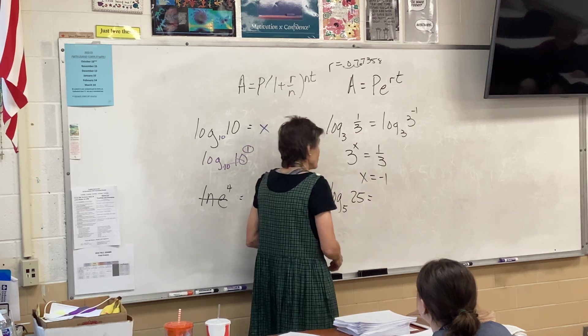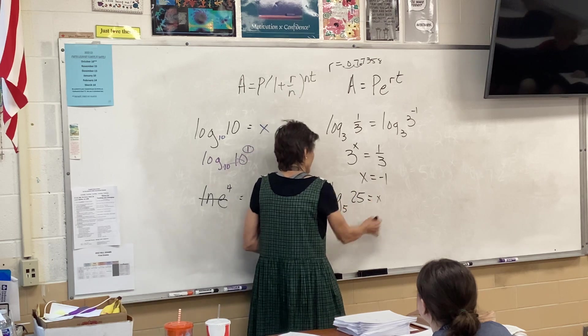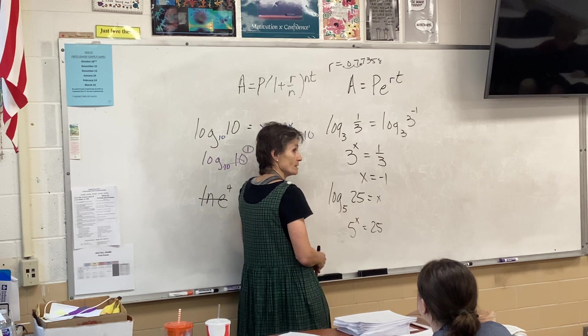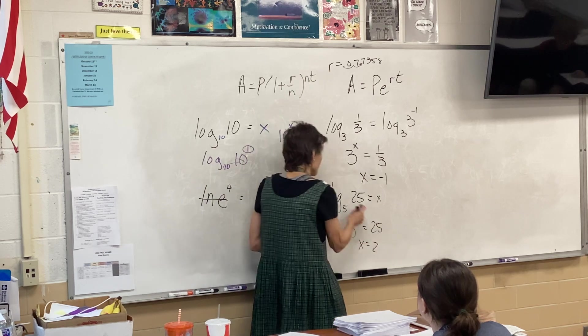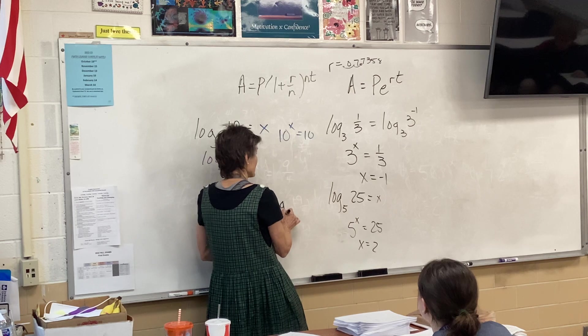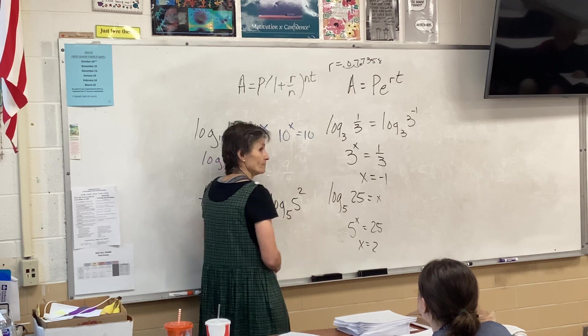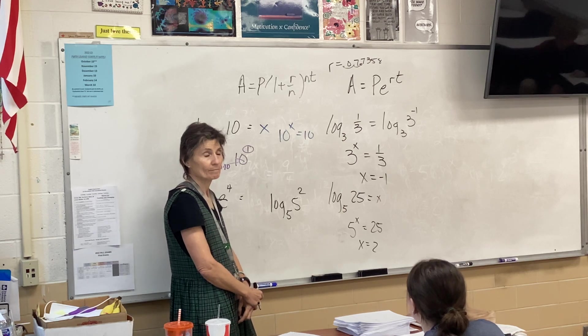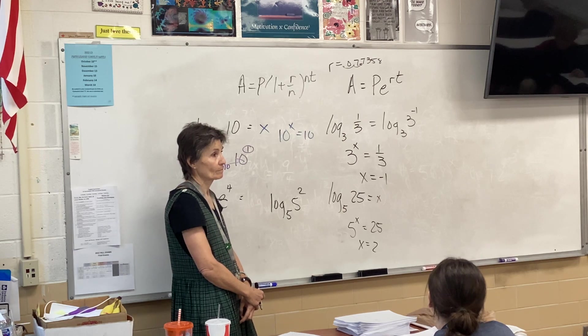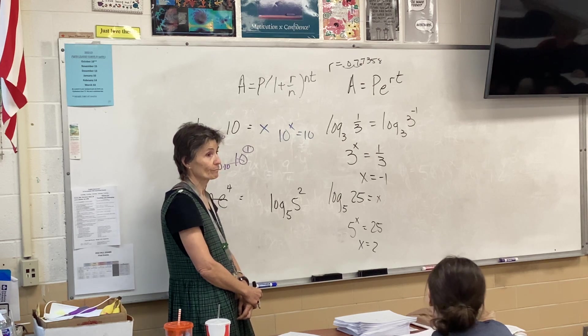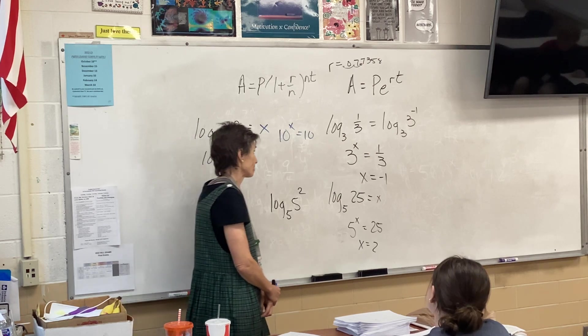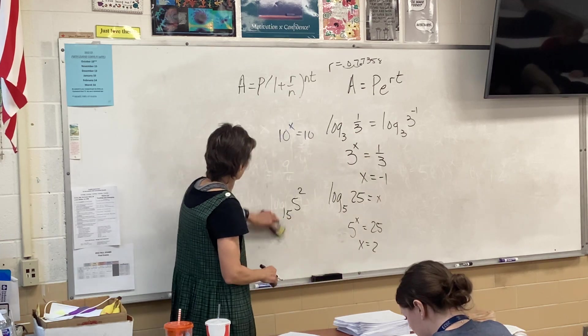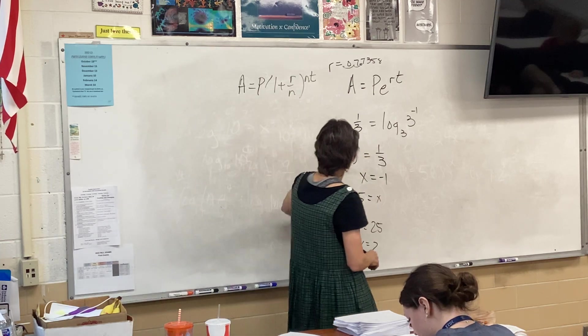Same thing here. You can do it, and say 5 to the x equals 25, so the answer is 2. Or you can rewrite the original problem as log base 5 of 5 squared, and the answer is 2. Right? All right. One more. What other kind of problem do we need to look at?